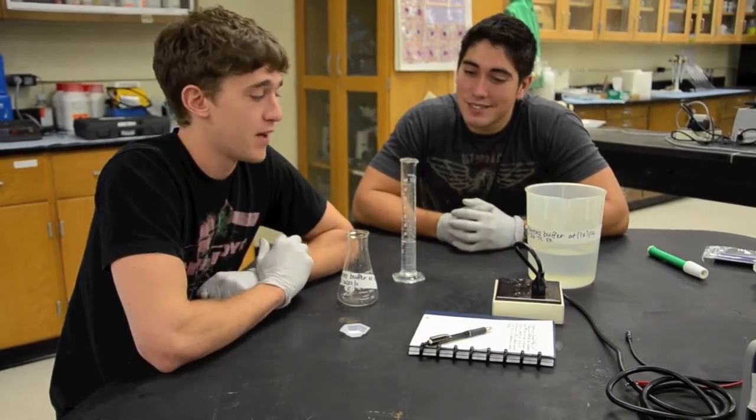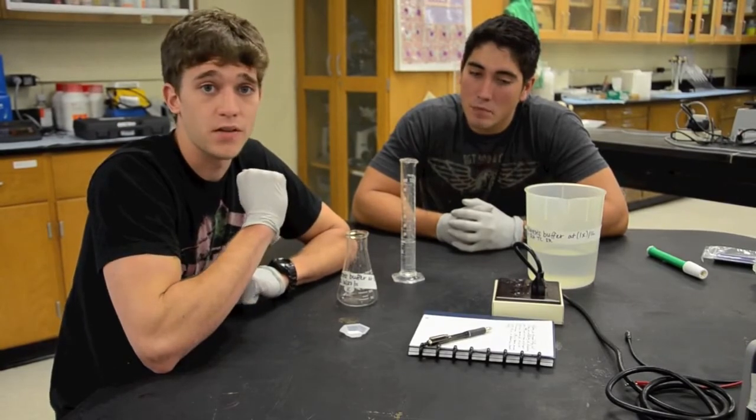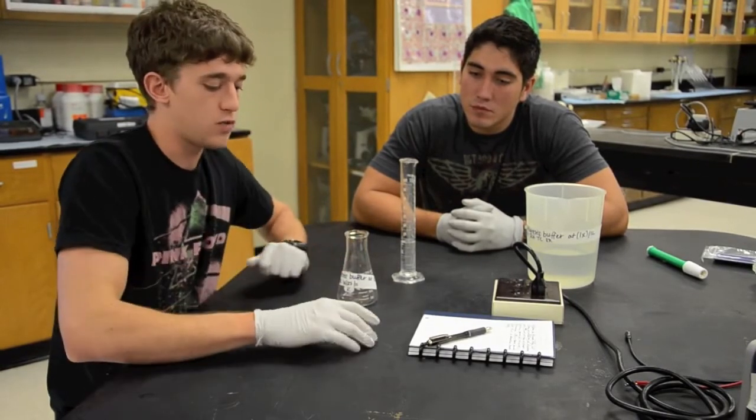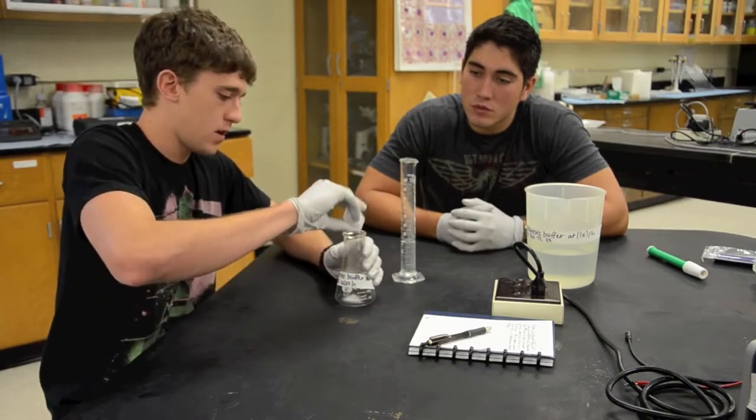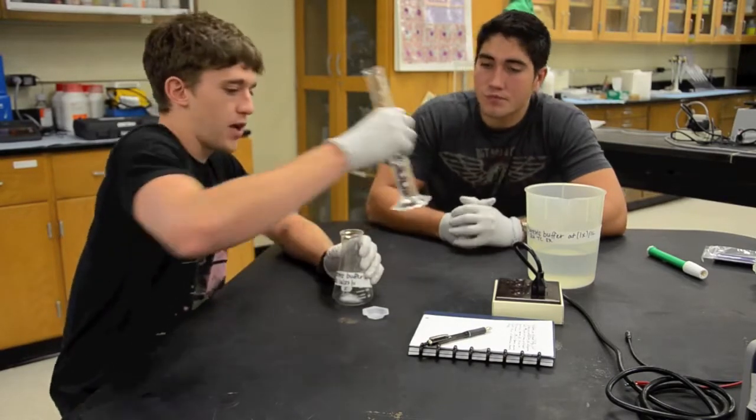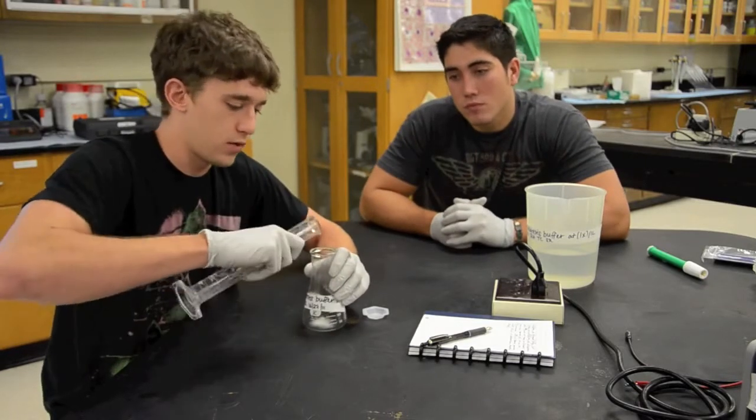Alright, welcome to lab. Today we'll be doing the electrophoresis lab. Now to do this we're going to start by mixing our agarose gel. First we're going to need to mix 0.23 grams of agarose powder with our accurately measured out 30 milliliters of electrophoresis buffer.